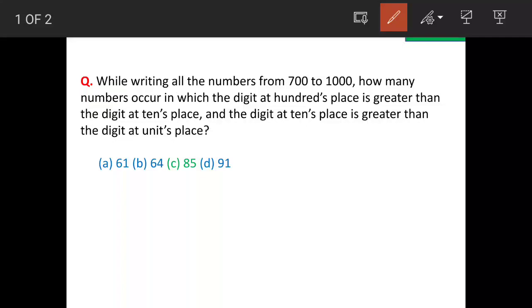While writing all the numbers from 700 to 1000, how many numbers will occur in which digit at hundred's place is greater than digit at ten's place and digit at ten's place is greater than digit at unit's place? So the answer is option C, 85.